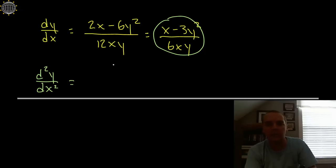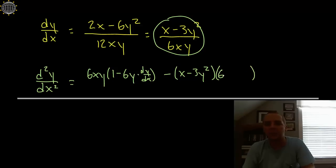So we'd have the low d high less high d low, if you're familiar with that way of knowing how to use the quotient rule. So we have low d high, so derivative of the numerator would be 1 minus 6y dy/dx, less high d low. So the numerator is (x - 3y²). d low will require the product rule again, so the derivative of the first times the second plus the first times the derivative of the second dy/dx, all divided by the denominator squared, so 36x²y².